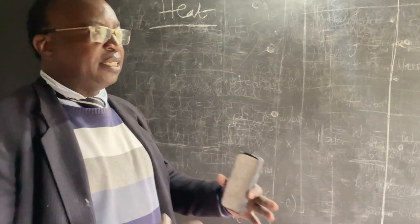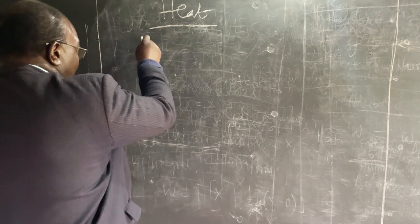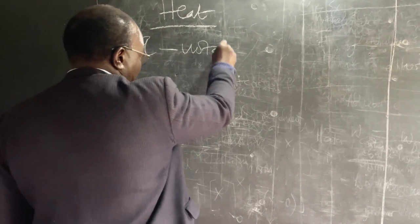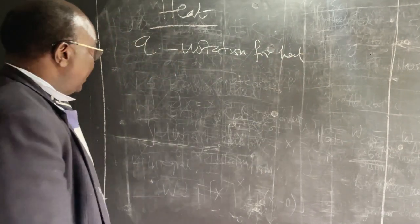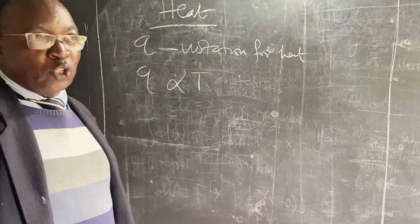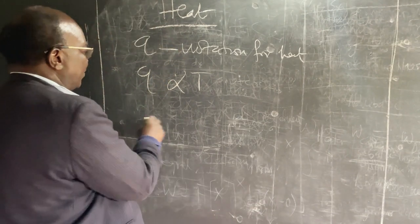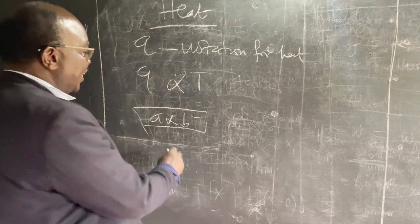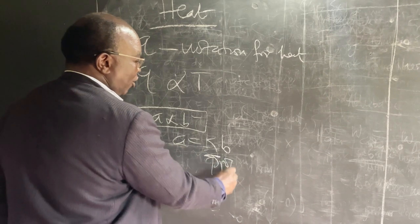In other words, as you apply more heat, the temperature increases. So in mathematics, you can say that heat, which we denote as Q, is proportional to temperature T. If we talk of two quantities being directly proportional — for example, if A is proportional to B — then in mathematical notation we can say A equals KB, where K is a proportionality constant.